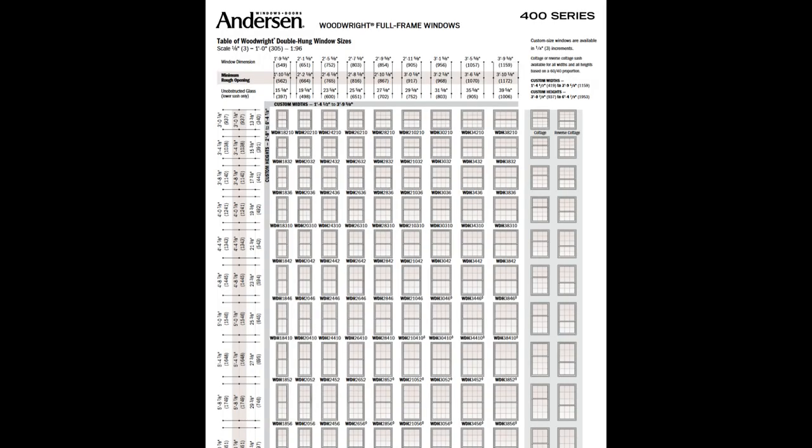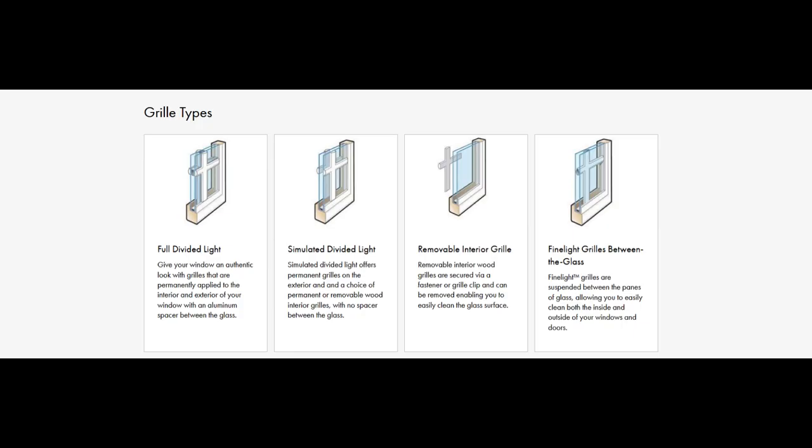Before we get too deep into this, these 400 series windows are available in pretty much any size you could want. They have standard sizes you can pick from or you can do custom sizes. There's a whole bunch of different grill types. You can have the grill applied to the inside but not the outside, or applied to inside and outside.